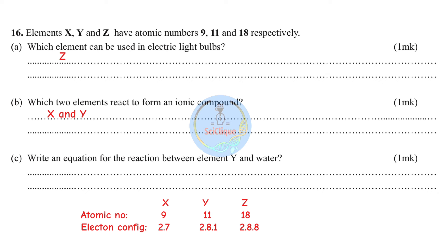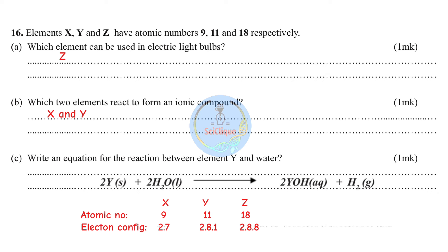Which two elements react to form an ionic compound? Not Z — so X (fluorine) and Y (sodium). Part c: write an equation for the reaction between element Y (sodium) and water. Y + H₂O → YOH + H₂. Balancing: 2Y + 2H₂O → 2YOH + H₂.